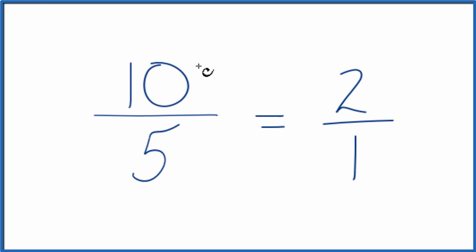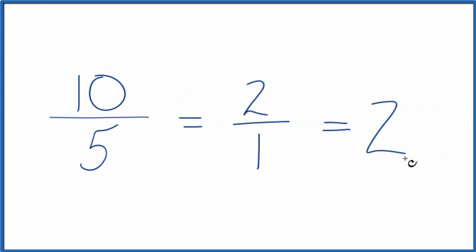So the fraction 10 fifths, we can simplify that down to 2 over 1. And 2 over 1, just dividing by 1, so 2 divided by 1, that's just 2. So we could say that it's equal to 2, the whole number, as well.